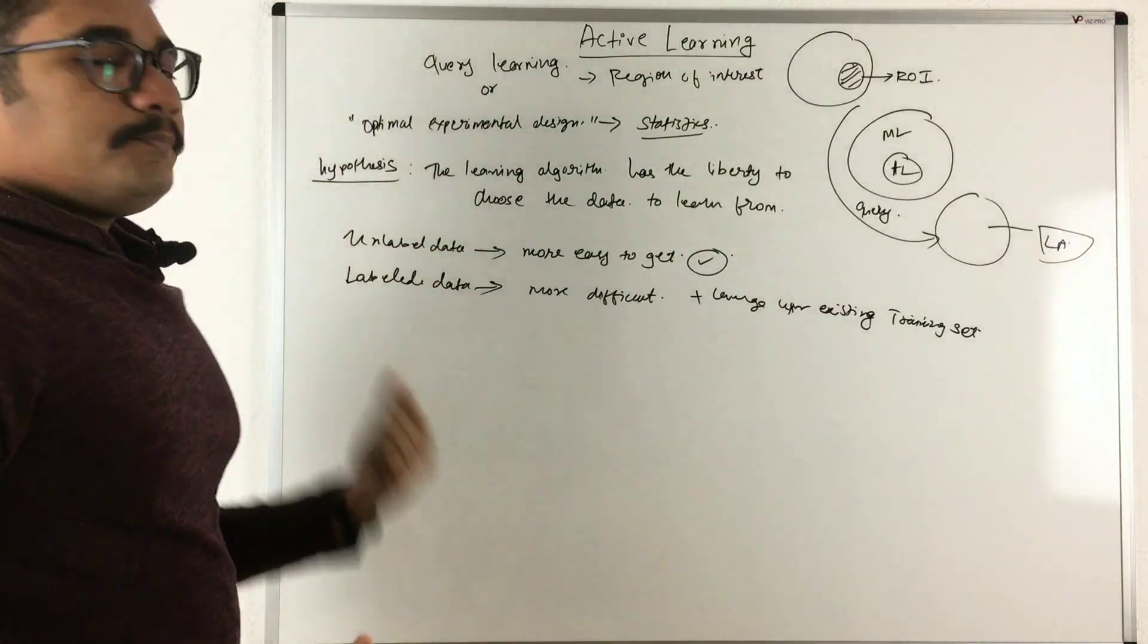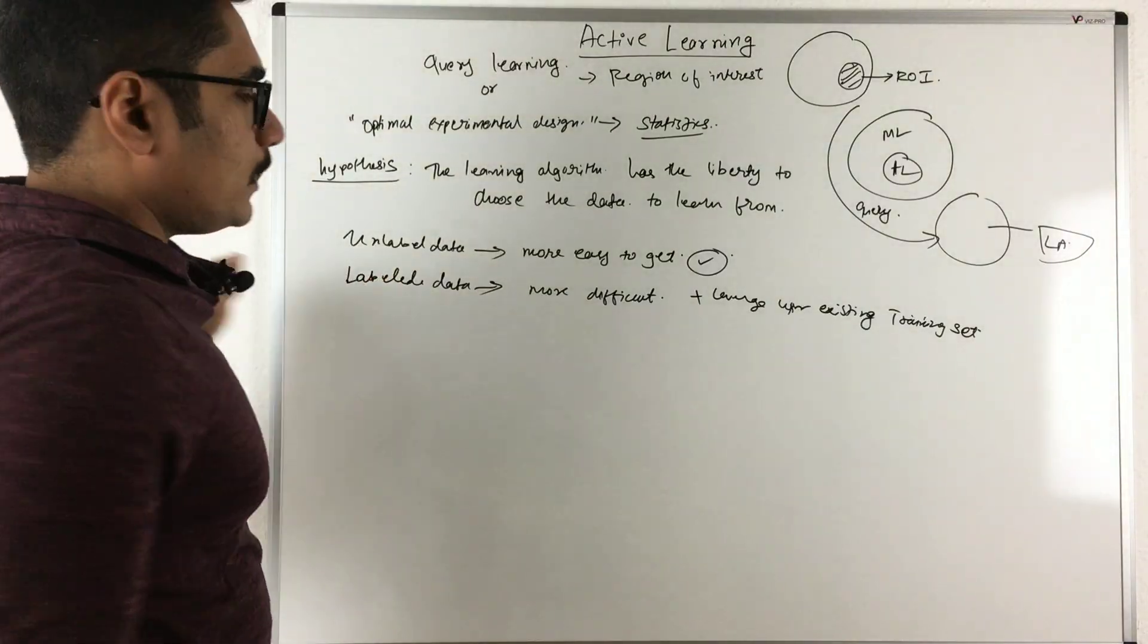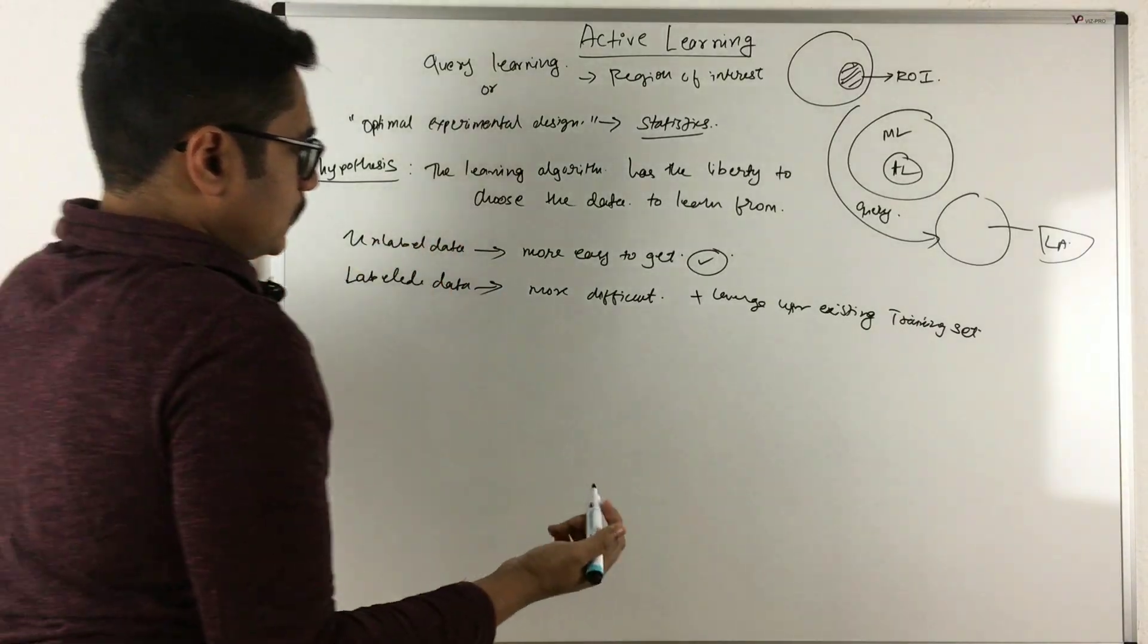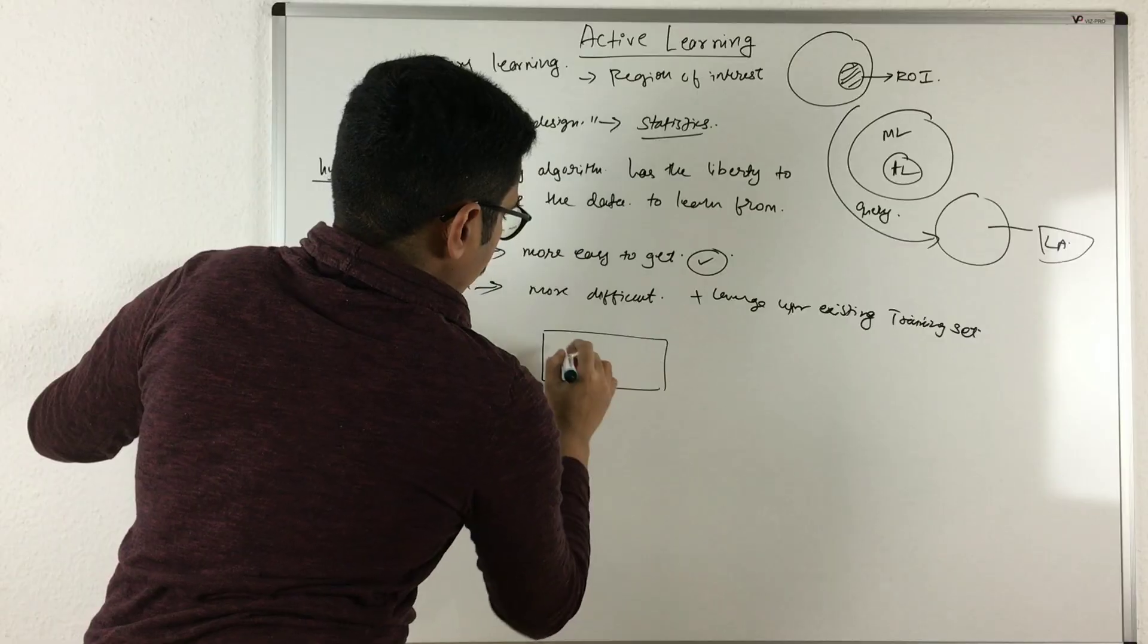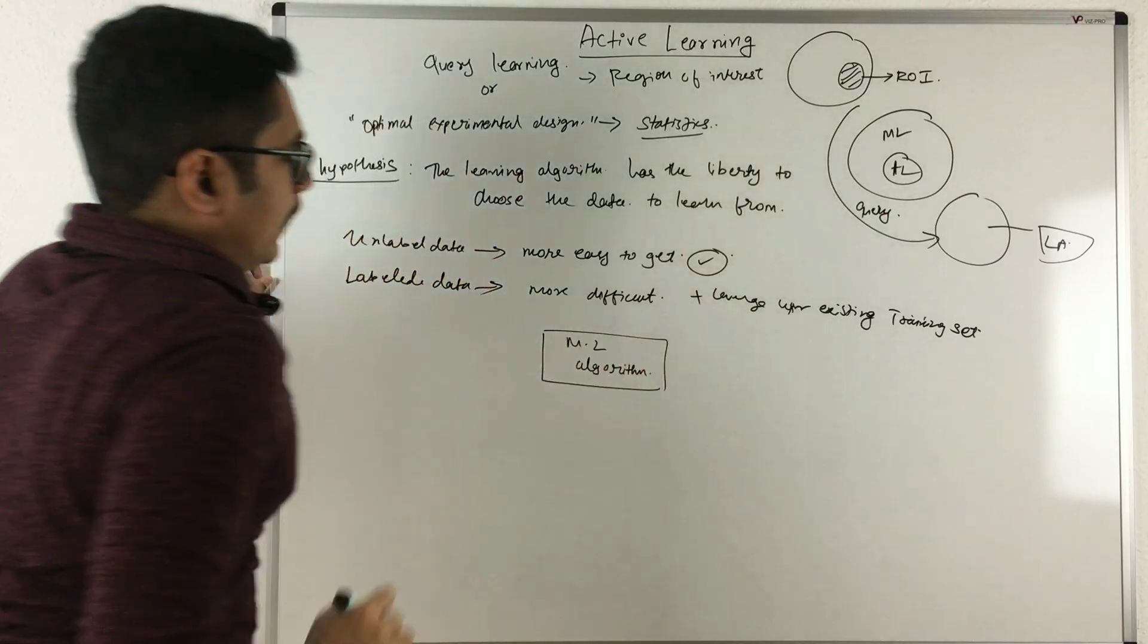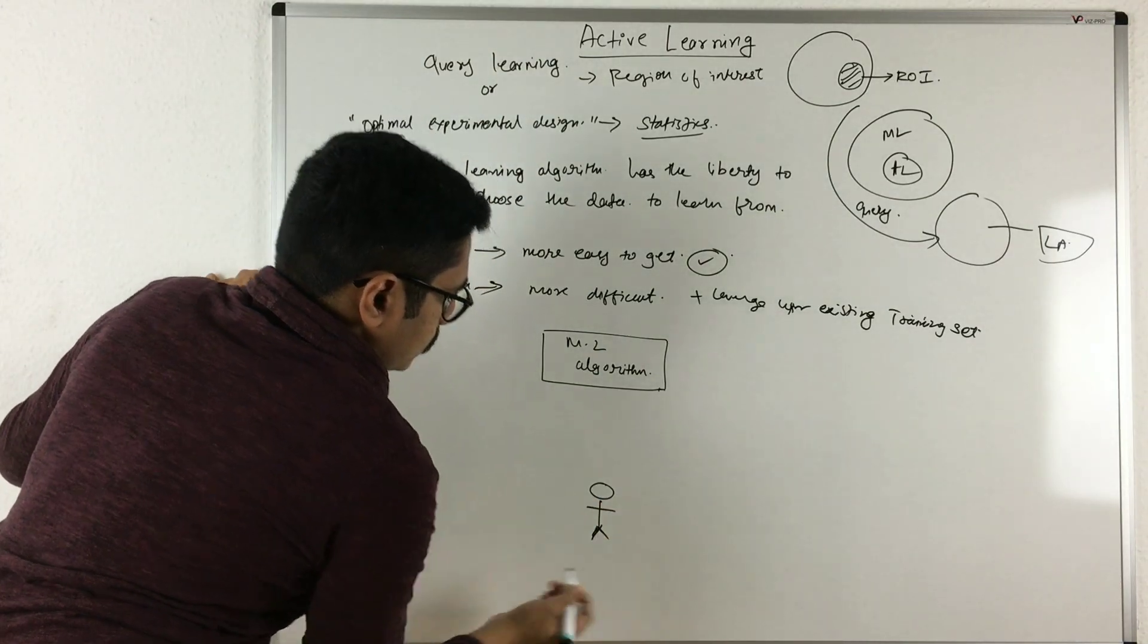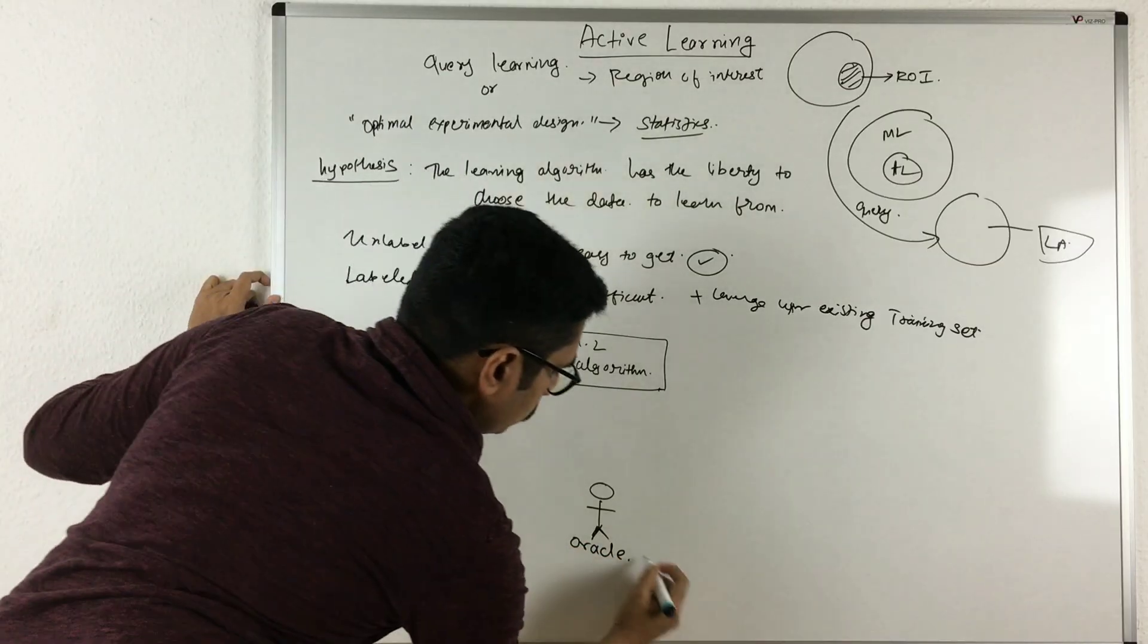Now this active learning is basically having a block diagram where you have certain entities and other actors involved. So I'll just quickly model this. You have your machine learning algorithm, and then you have an actor. This is basically called an oracle.